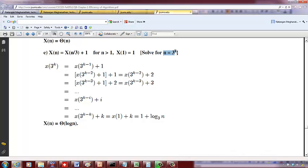approach of doing n equals that base, which is 3 in this case, raised to k. So then you can do X(3^k). Replace n with 3^k: X(3^k) = X(3^k/3) + 1, which is X(3^(k-1)) + 1.